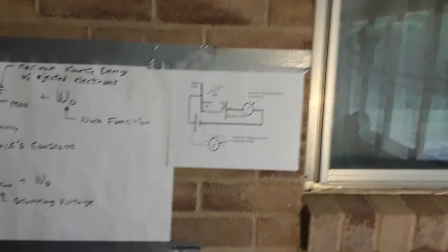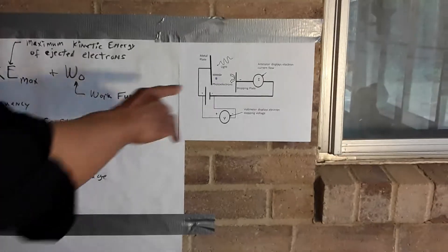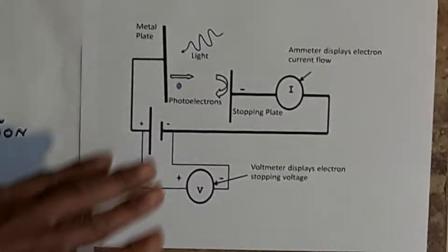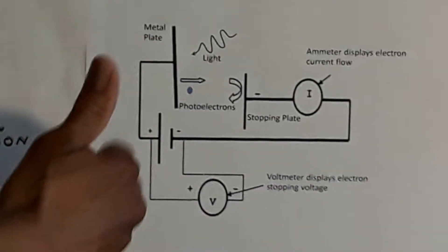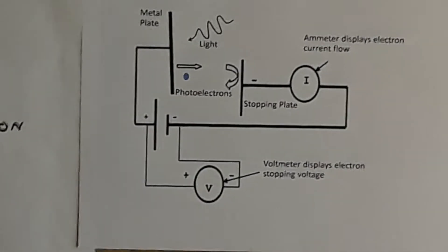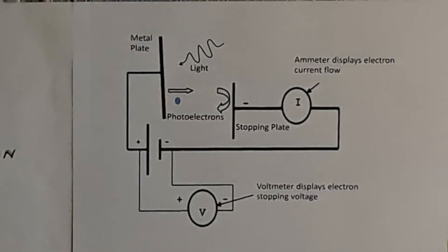So again, the idea is that once we shine the light source on the plate, current will start to flow. And then we're going to put this back voltage to stop the current from flowing.